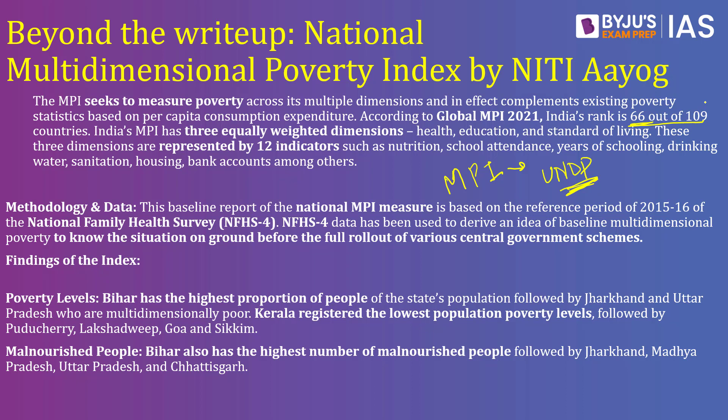The Indian MPI takes into consideration three dimensions — health, education, and standard of living — which are further divided into a total of 12 indicators such as nutrition, school attendance, years of schooling, drinking water, sanitation, and so on. The data calculated through the MPI comes from the National Family Health Survey number 4. This is where the questions have been raised.